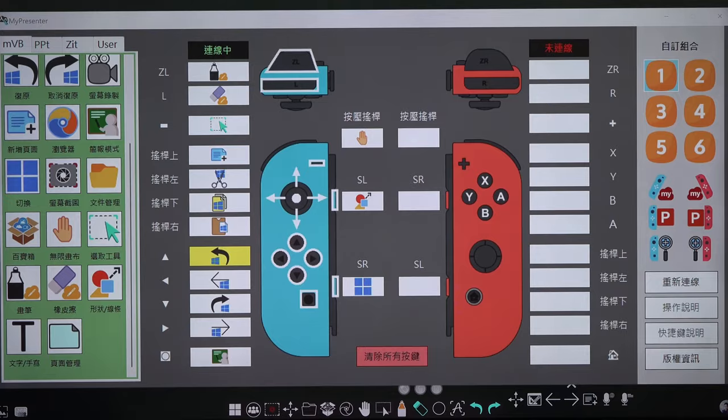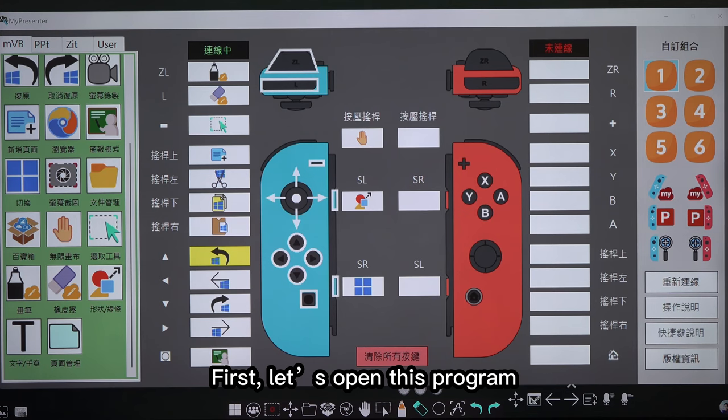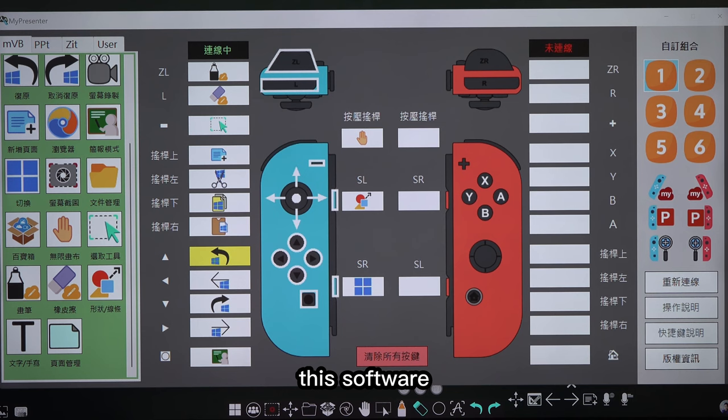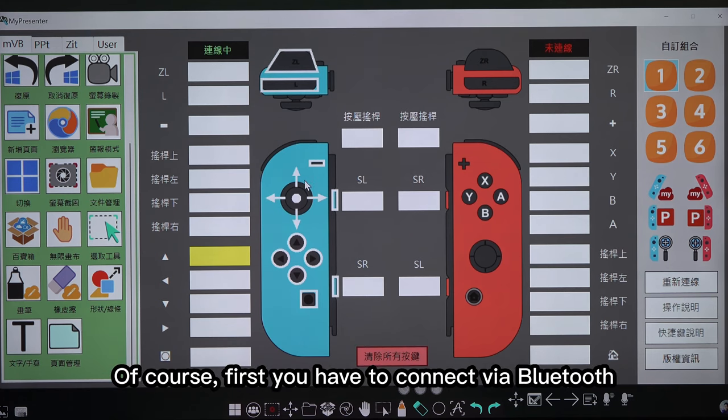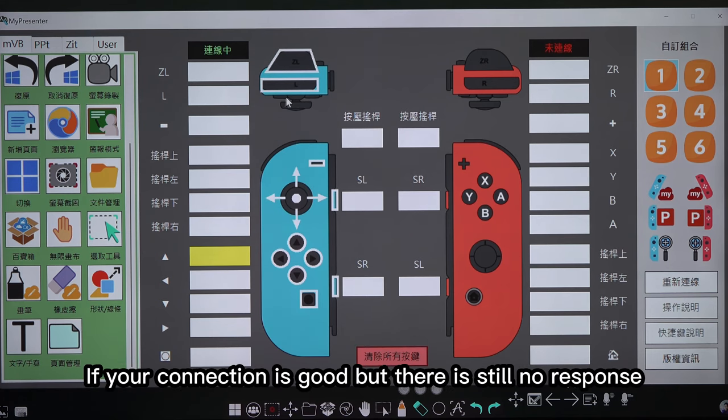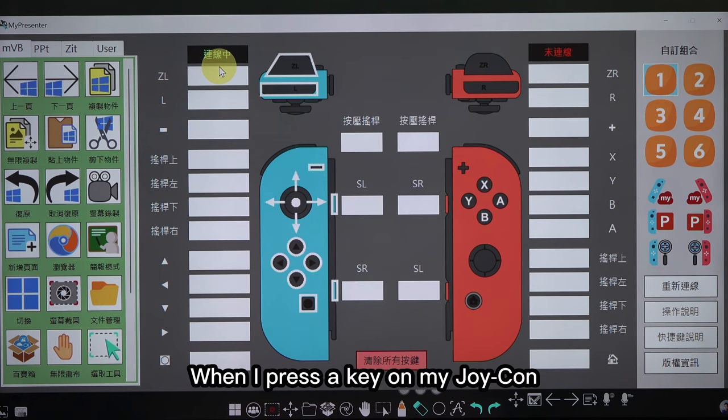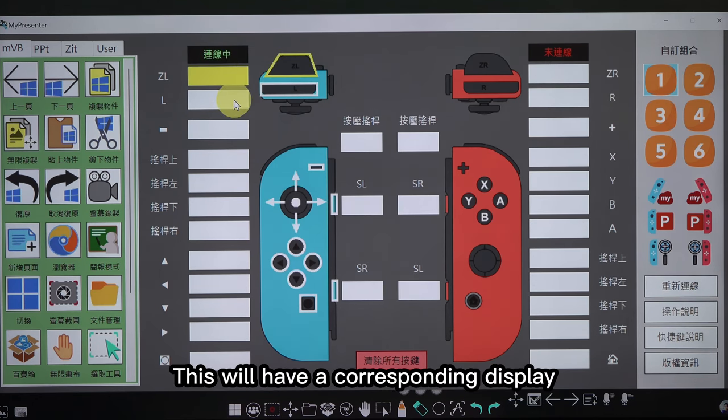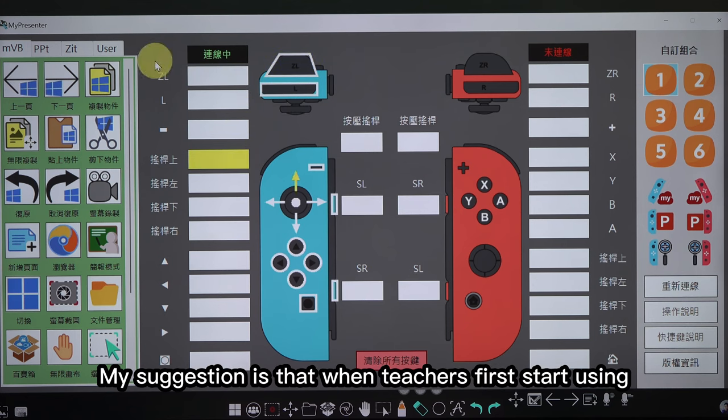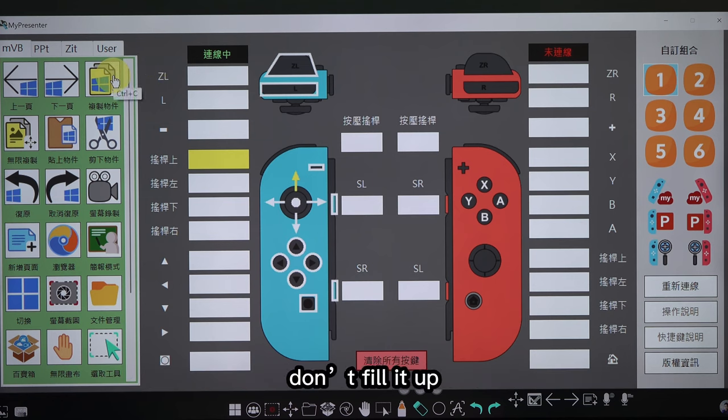Super simple. First, let us open this program. This software. Let's clear all the keys first. Of course, first you have to connect via Bluetooth. If your connection is good but there is still no response, you can press reconnect. We can see that when I press a key on my Joy-Con, this will have a corresponding display. My suggestion is that when teachers first start using, don't fill it up. You can just place a few for now.